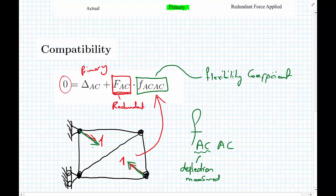In this case we're measuring the deflection that happens between joint A and C. The second subscript now tells us where the unit load has been applied.